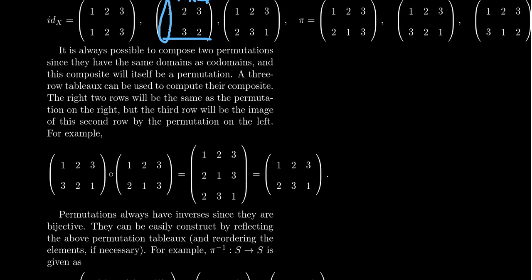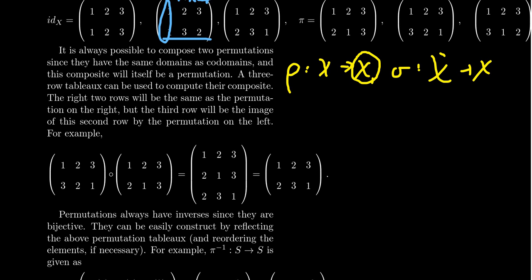The next thing to mention is that permutations can be composed. Because they are functions, the idea of function composition comes into play. If we have two permutations — rho from X to X and sigma from X to X — then since the codomain of rho equals the domain of sigma, we can form the composition sigma composed with rho, and that is itself a permutation on S_x.